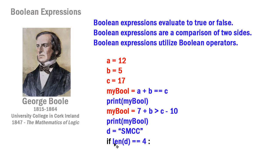We can also work with strings. For example, d = 'smcc' and then checking if len(d) == 4 — since there are 4 characters in 'smcc', that is a true statement. That's how we use these expressions within a structure such as an if statement. After that we'll look at if-else and if-elif-else structures — three different conditional structures over the next three videos, and also Boolean expressions in a while loop.